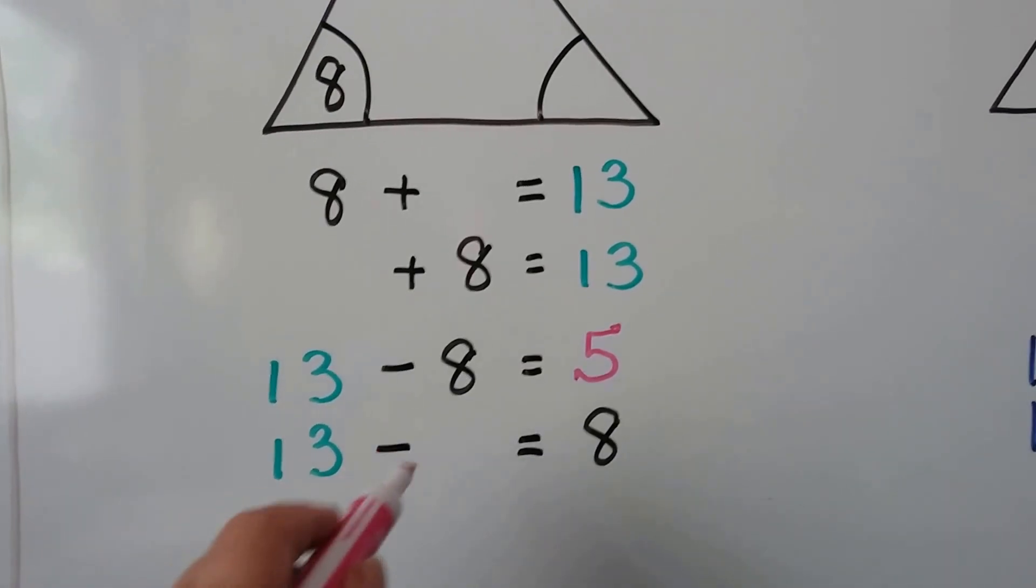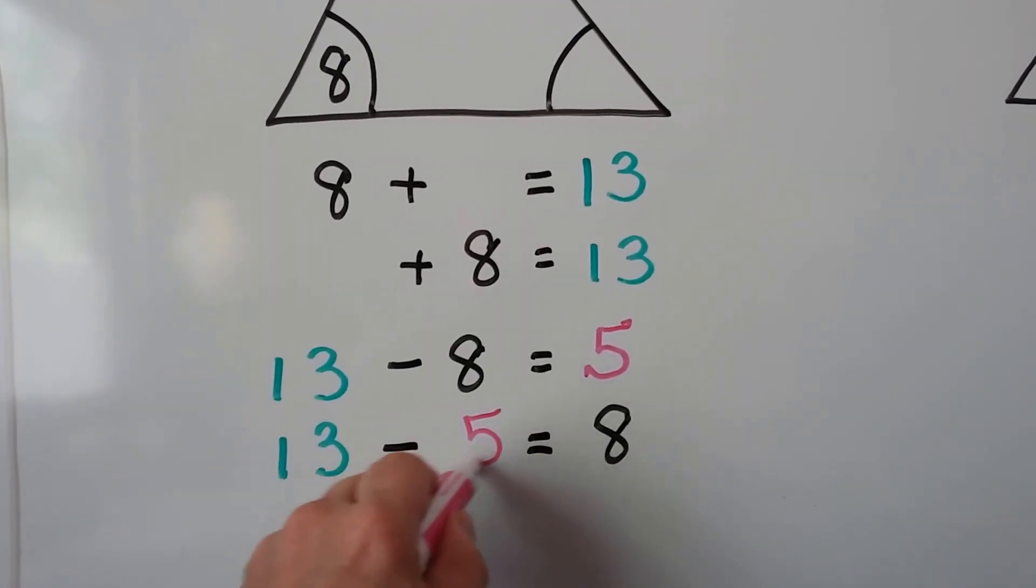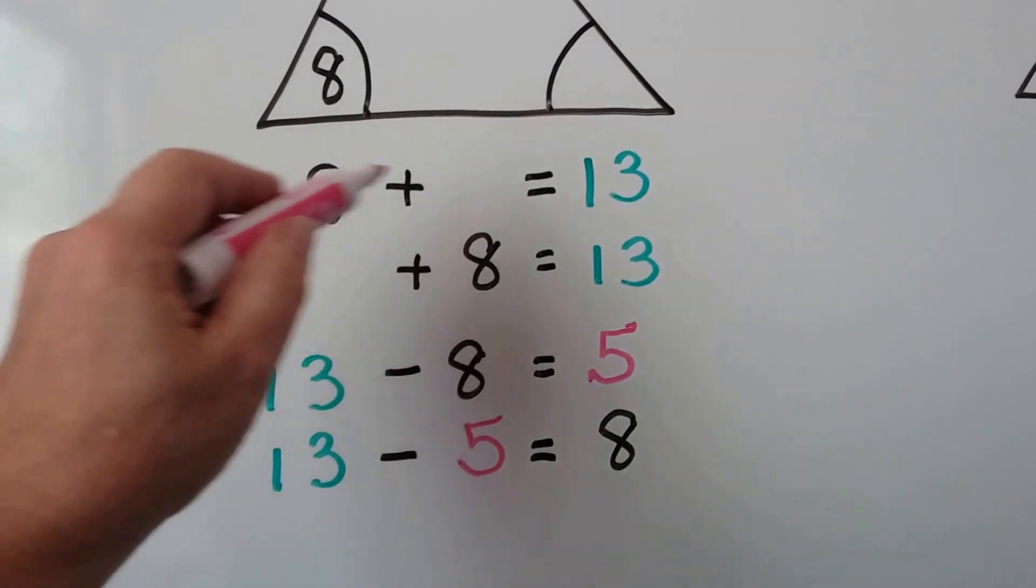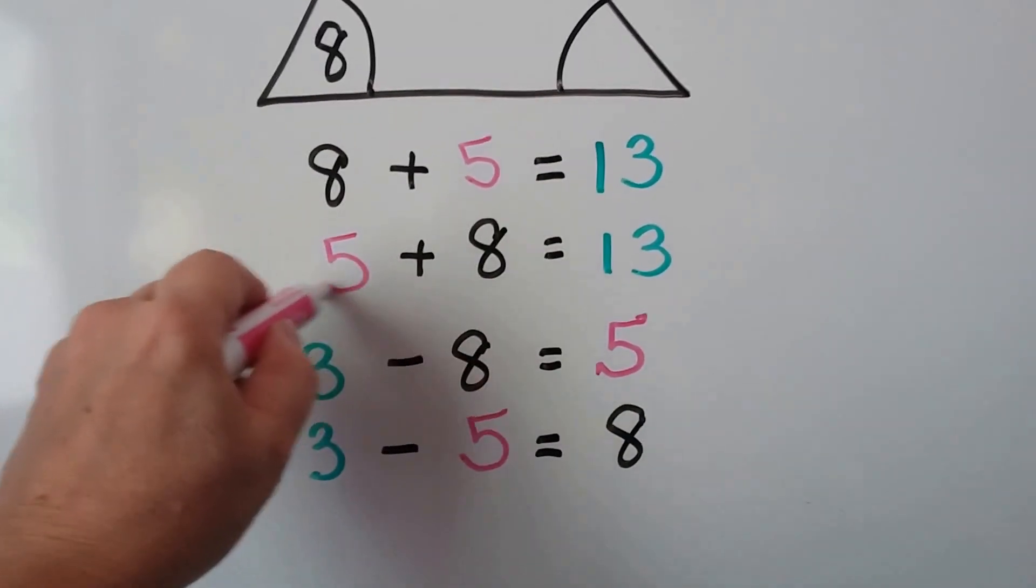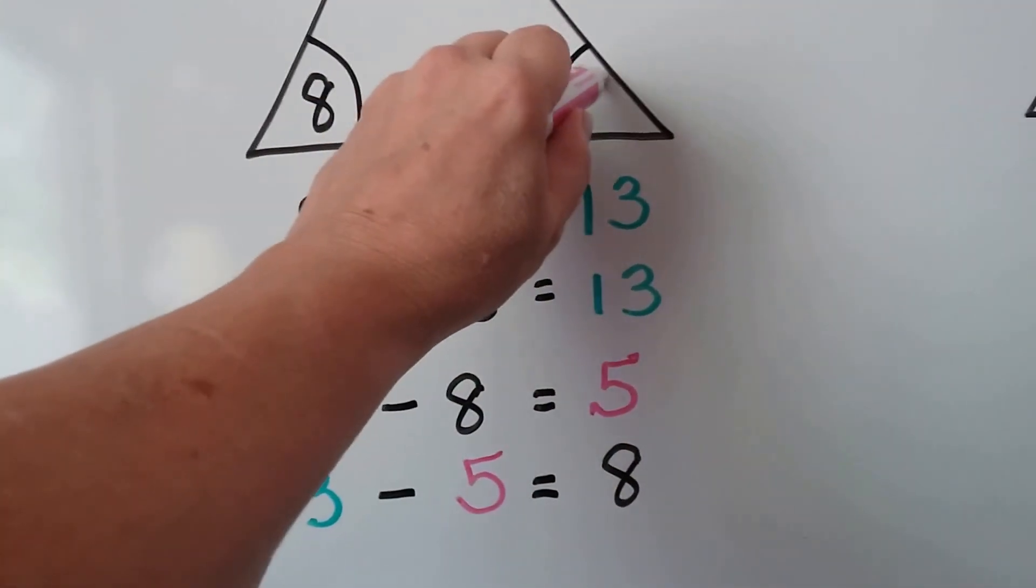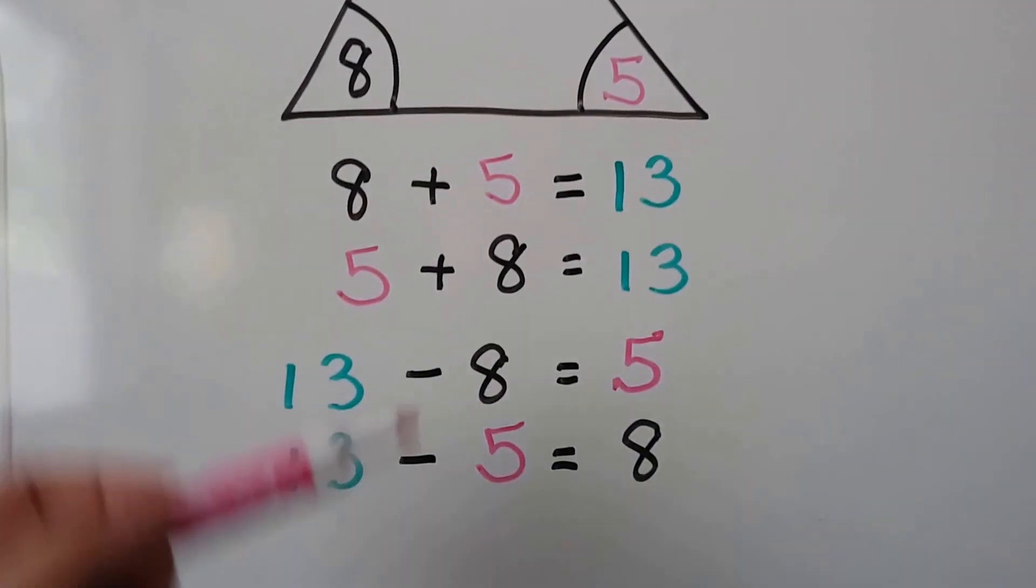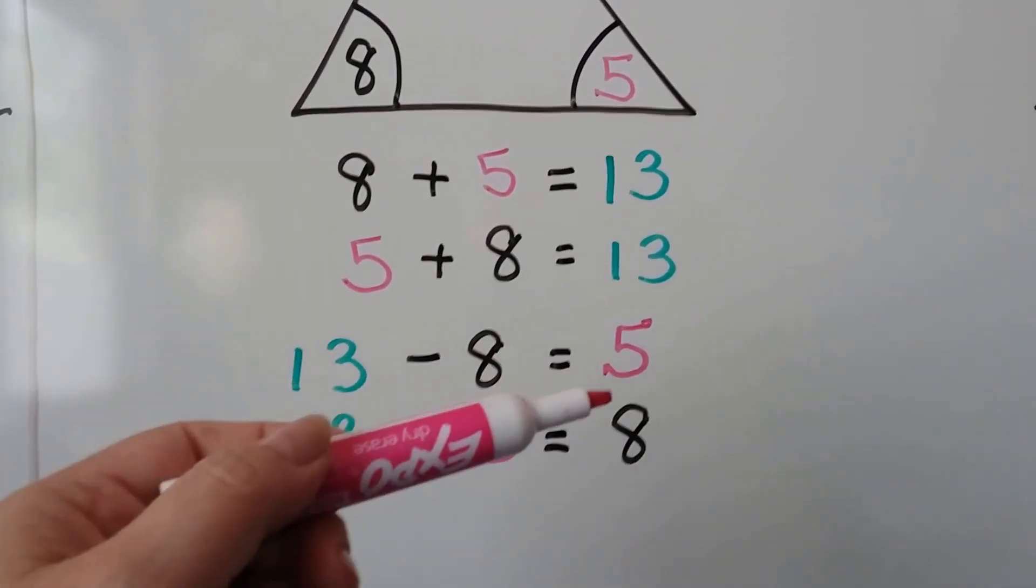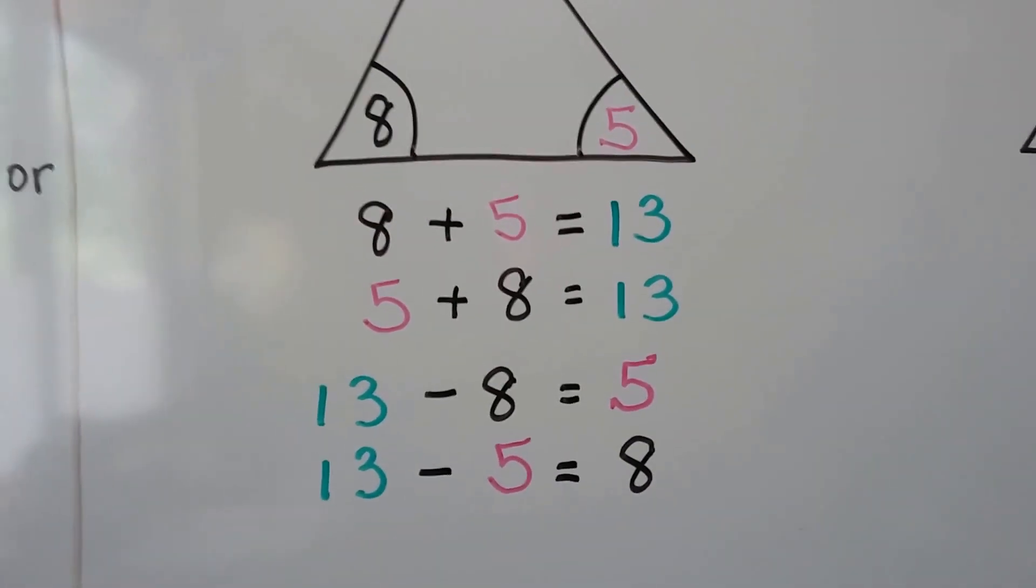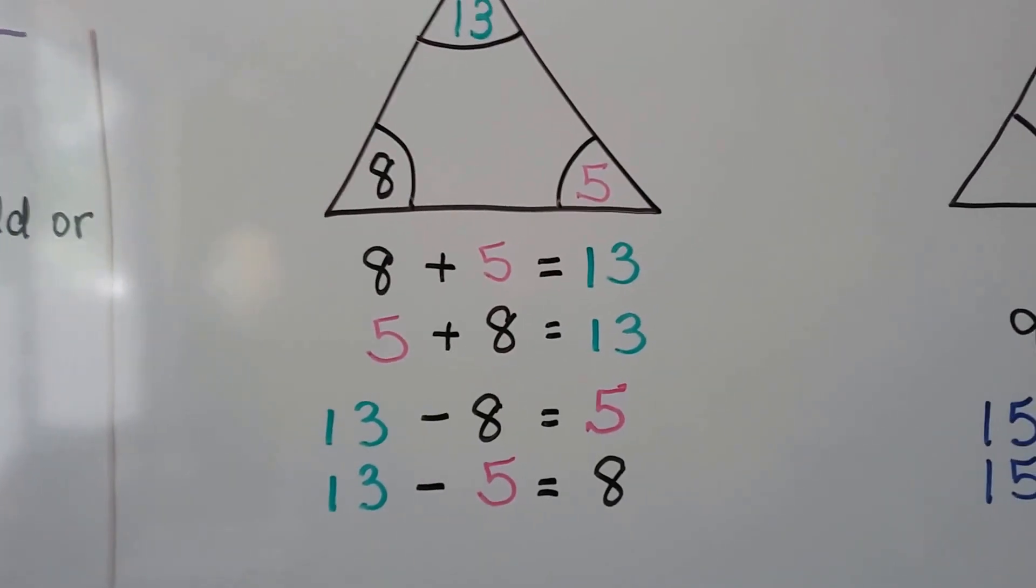And that means thirteen minus five equals eight. And it also means that eight plus five equals thirteen, and five plus eight equals thirteen. We can put our five in here. So by writing the fact families with the missing number, we can solve one of them and fill in the triangle and complete our triangle.